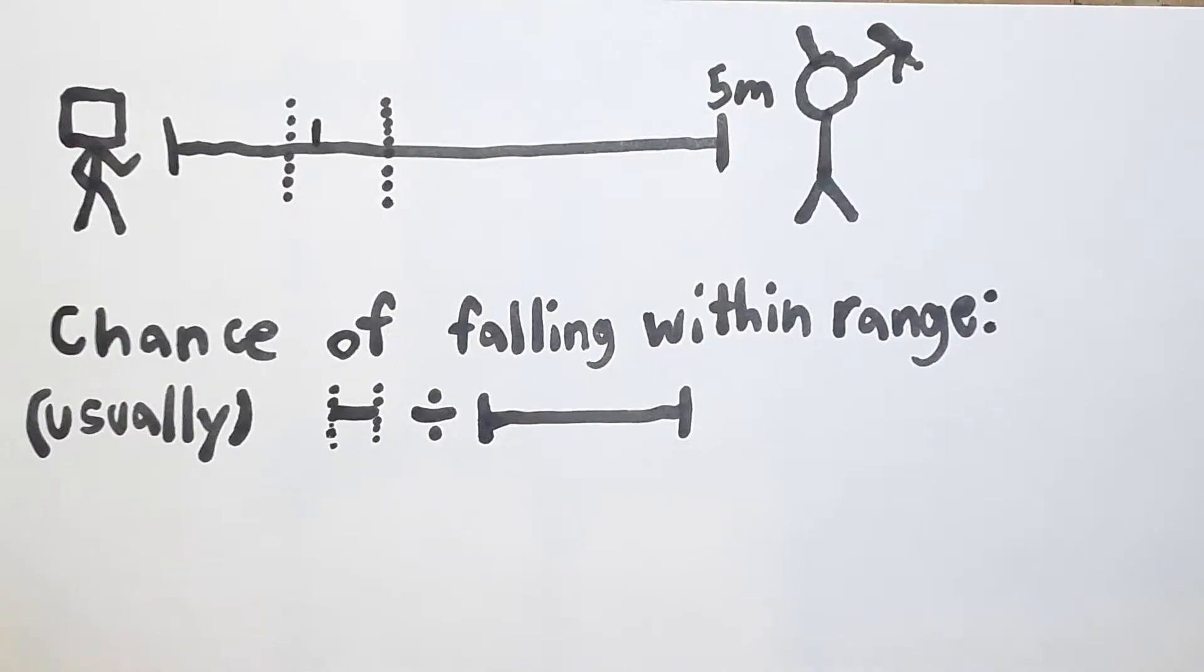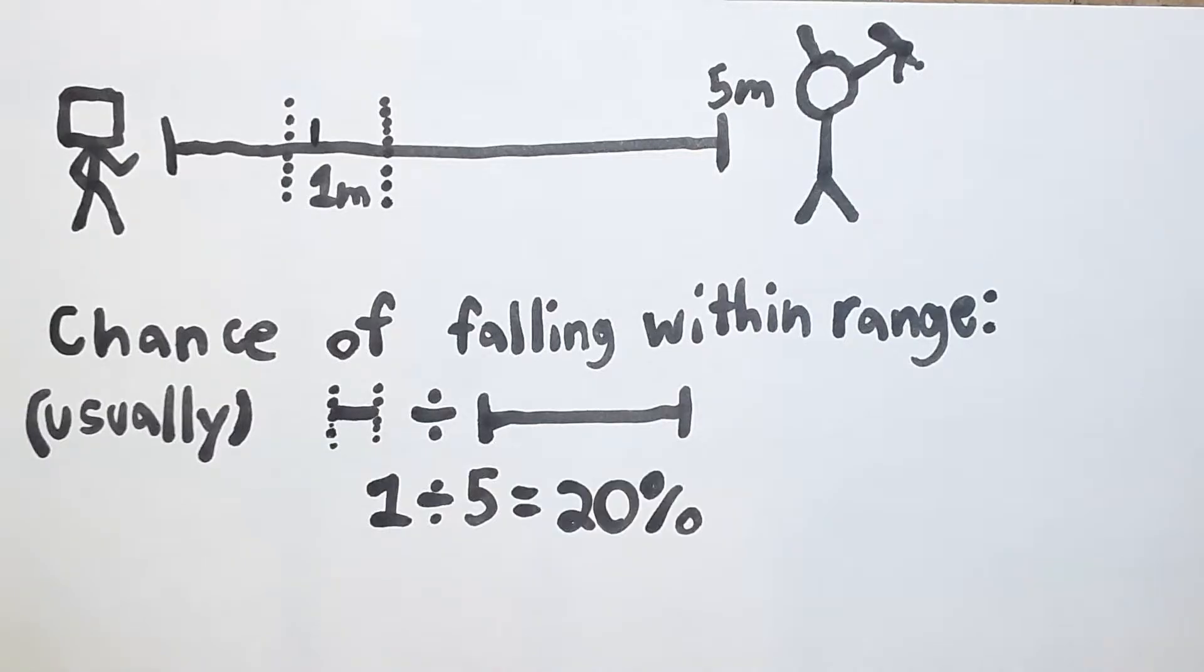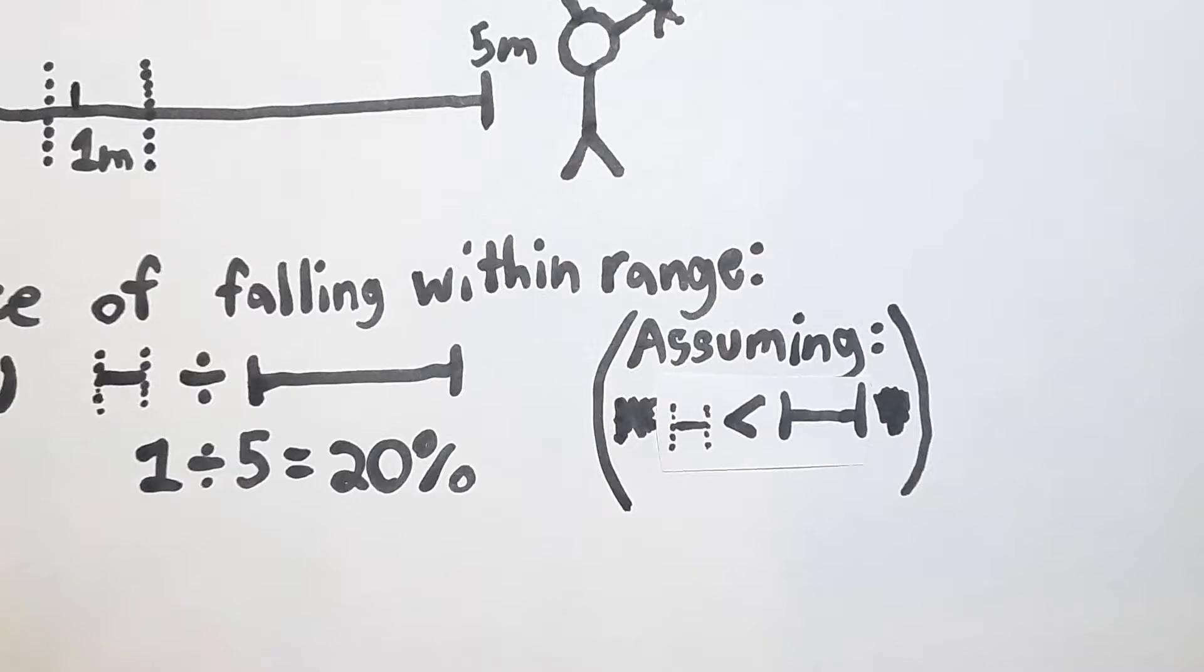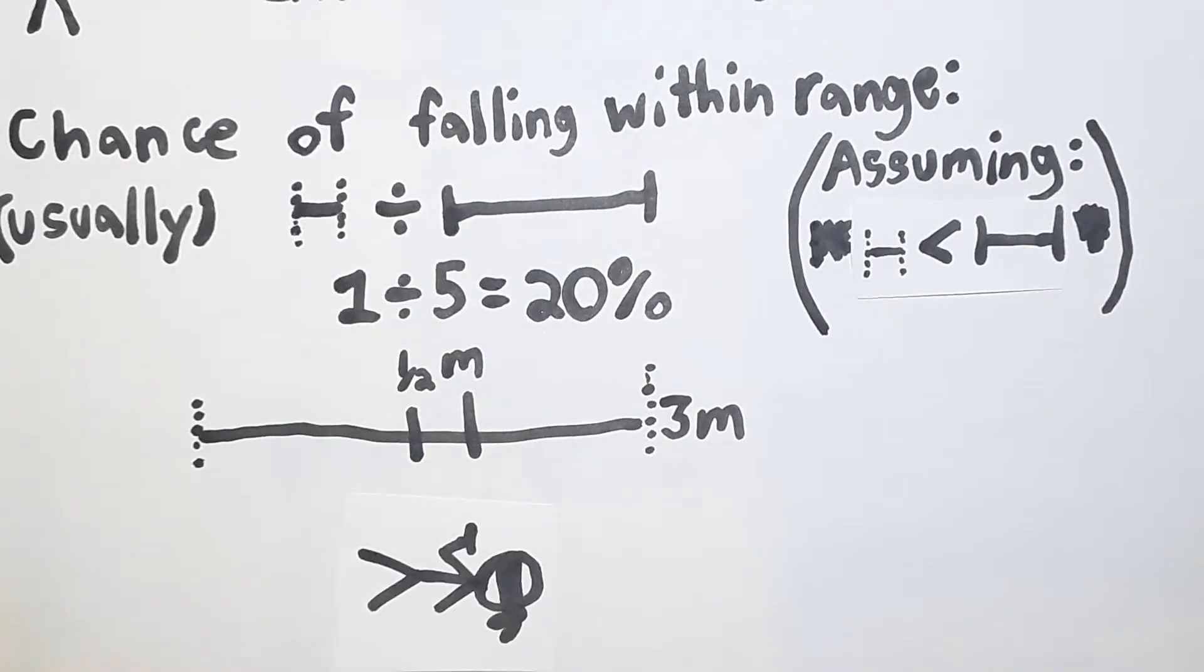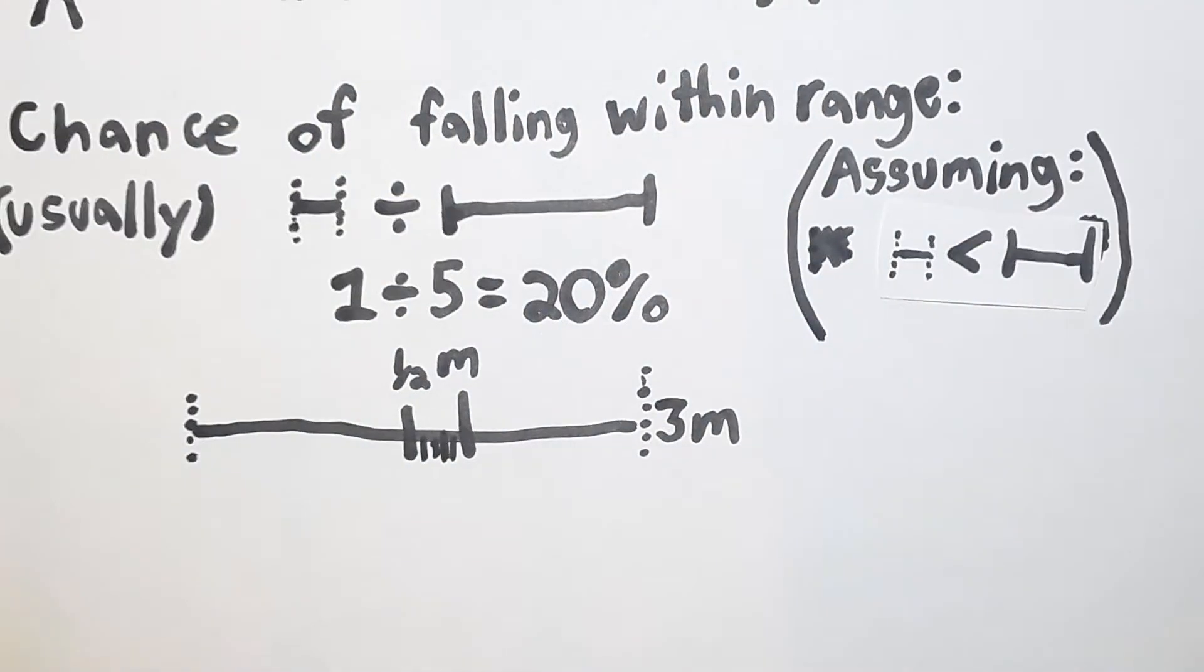So if the dart could have landed anywhere on a 5 meter range, the chance of it falling in a certain 1 meter range would be 1 meter divided by 5 meters which would be equal to 1 fifth, which is equal to 20%. This is of course assuming the certain range we're talking about is smaller than the range of all possible values. If we were hoping to see the darts fall somewhere within a 3 meter range, but the dart thrower is so close that all his darts fall in a half meter wide section in the middle, then of course all the darts are going to fall in the range we're looking for.